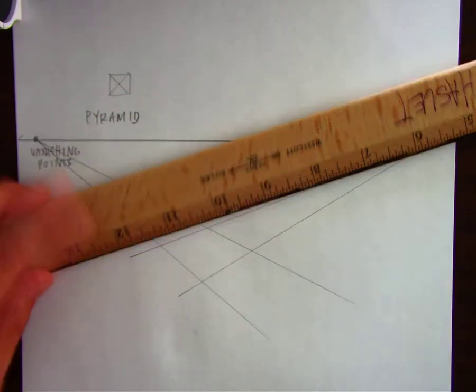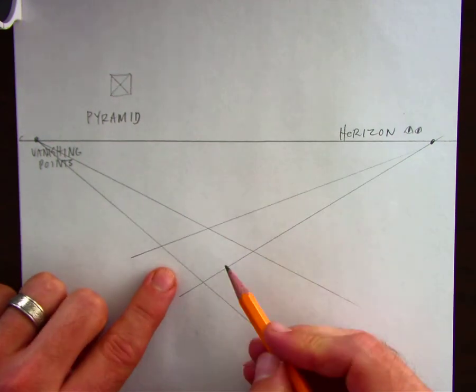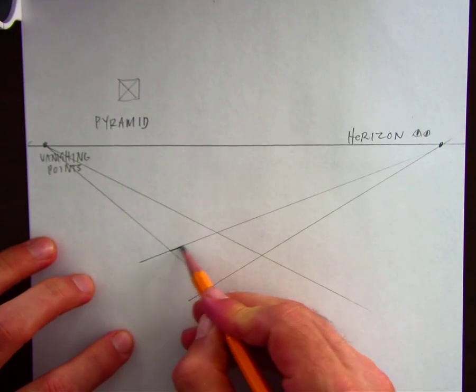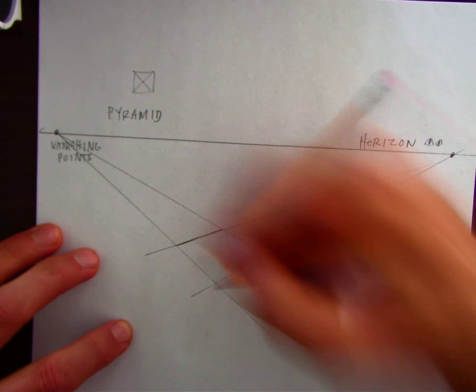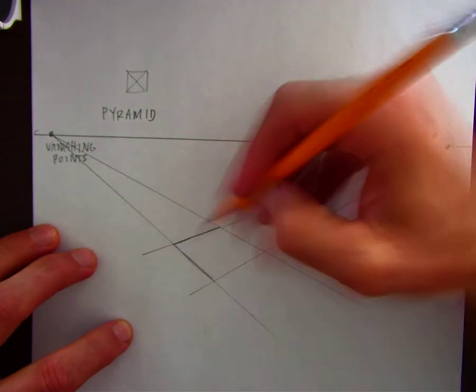Here, I flip my ruler just to see this a little bit easier. But this actually, and it looks like a diamond, but that's really a square. I could outline it a little bit more, just to make it that much more apparent.